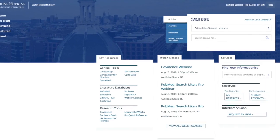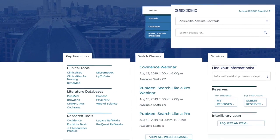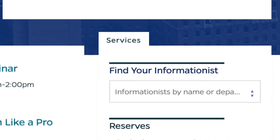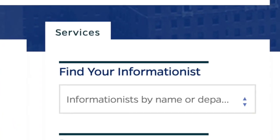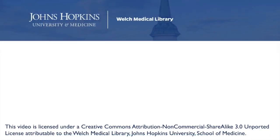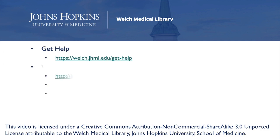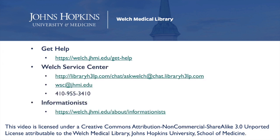Working with an informationist starts with identifying your assigned informationist and reaching out to them. We look forward to working with you. For more information about how to find or collaborate with your informationist, visit the Get Help section on our website, reach out to the Welch Service Center through chat, email, or phone, or contact your informationist directly.